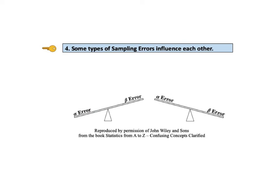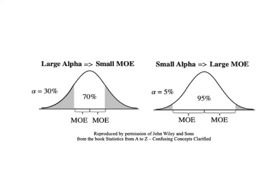The critical value of a test statistic — such as z, t, F, or chi-square — is in the numerator of the formula for margin of error. Larger critical values result in a larger MOE. For any given distribution, the critical value depends entirely on alpha. A larger value for alpha results in a smaller critical value, and a smaller critical value means a smaller margin of error. With alpha at 30%, MOE is comparatively narrow; with the more common alpha of 5%, the margin of error is considerably wider.